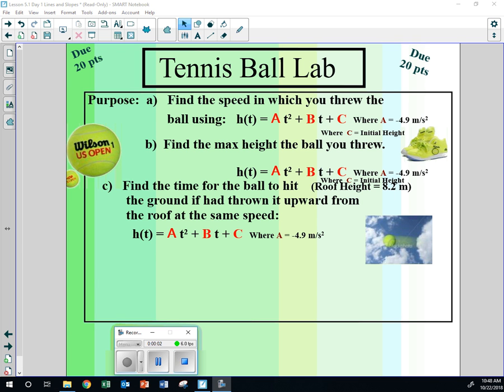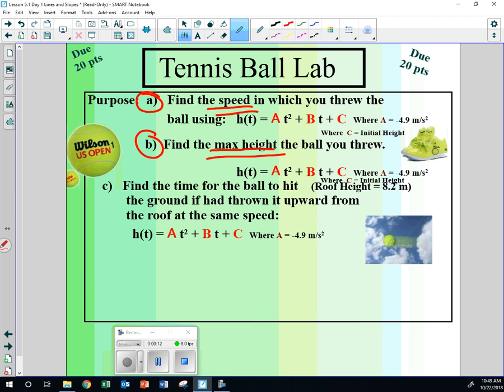What we're going to do is find three things. We're going to find how fast you can throw a ball in miles per hour, how high you can throw a ball, and from your greatest speed, your longest time, we're going to imagine you're up on the roof, which is about 8.2 meters high. If you were up on the roof with the same speed, then how long would it take to hit the ground?